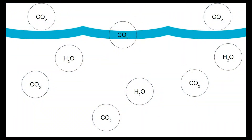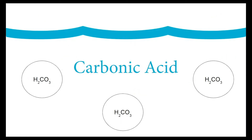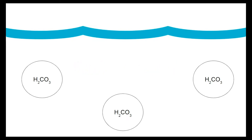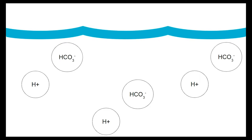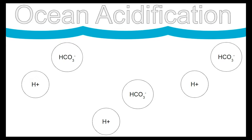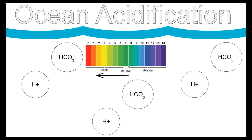Let's break down the reaction carbon dioxide undergoes in seawater. When carbon dioxide gets pulled into the ocean by the waves, it mixes with the water, and the water molecules and carbon dioxide molecules interact and combine. Together they create carbonic acid. Carbonic acid is a weak acid that easily dissociates into bicarbonate ions and hydrogen ions. The addition of these hydrogen ions to the water increases its acidity. This process is known as ocean acidification and is causing the pH of the water to lower.